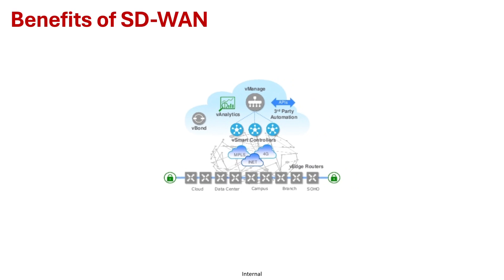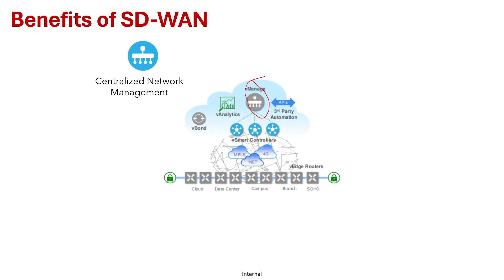Let's look at some of the benefits of SD-WAN. The first benefit is centralized network management — traditional WANs require manual configuration at each site, which is time-consuming and prone to error. SD-WAN simplifies this by managing and configuring all branch devices from a single dashboard, using managers and controllers to centralize configuration, and consistently applying network policies across all sites with just a few clicks.